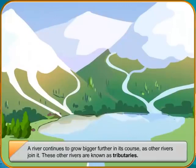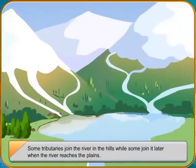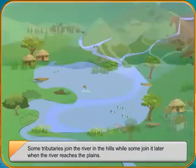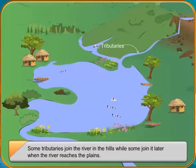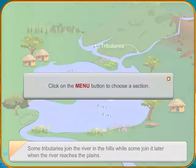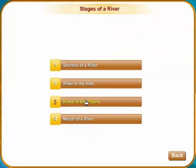The river now flows down the plains slowly as the plains are flat. In the plains, the river is heavy with the mud and sand that it has carried on its journey down the mountains and through the plains. Fine soil brought down the mountains by a river is called silt.